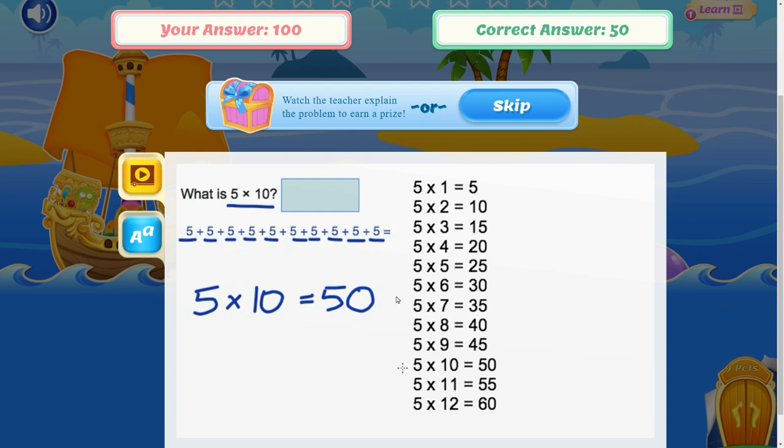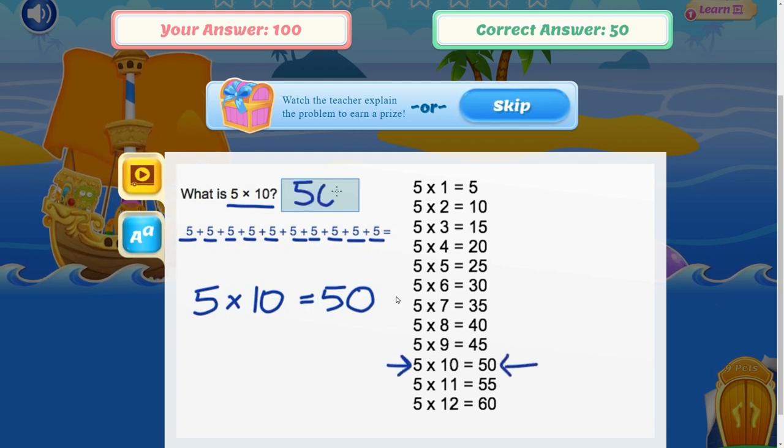Now let's look at our multiplication tables and in fact 5 times 10 is 50. So the correct answer here is 50.